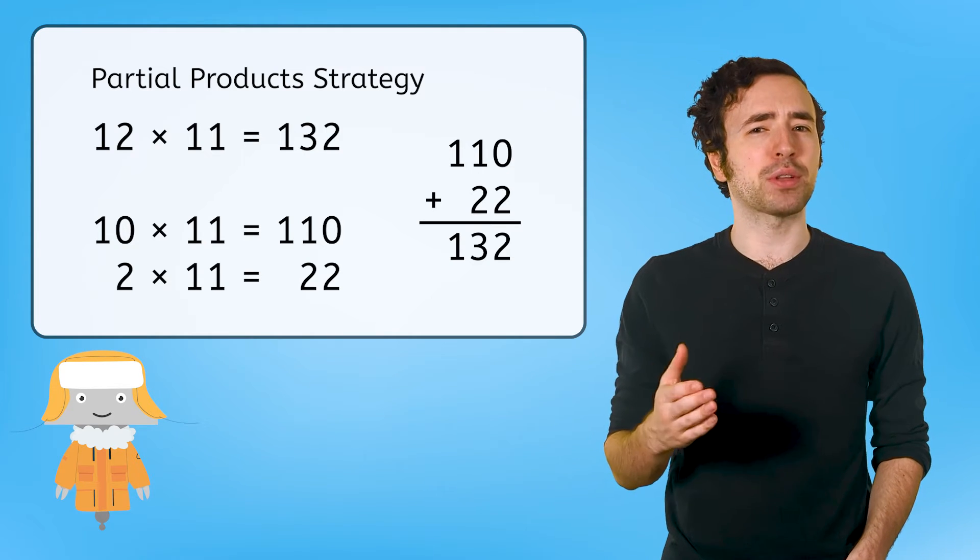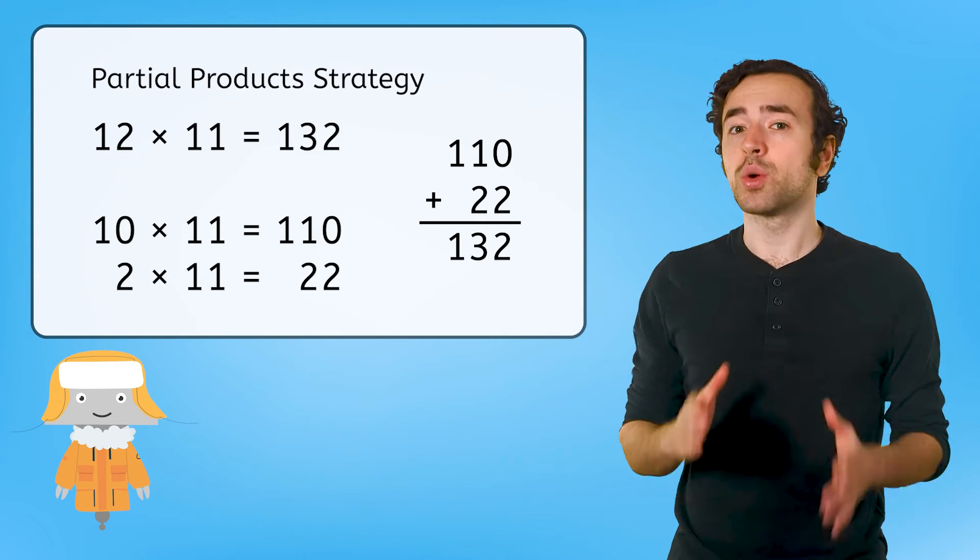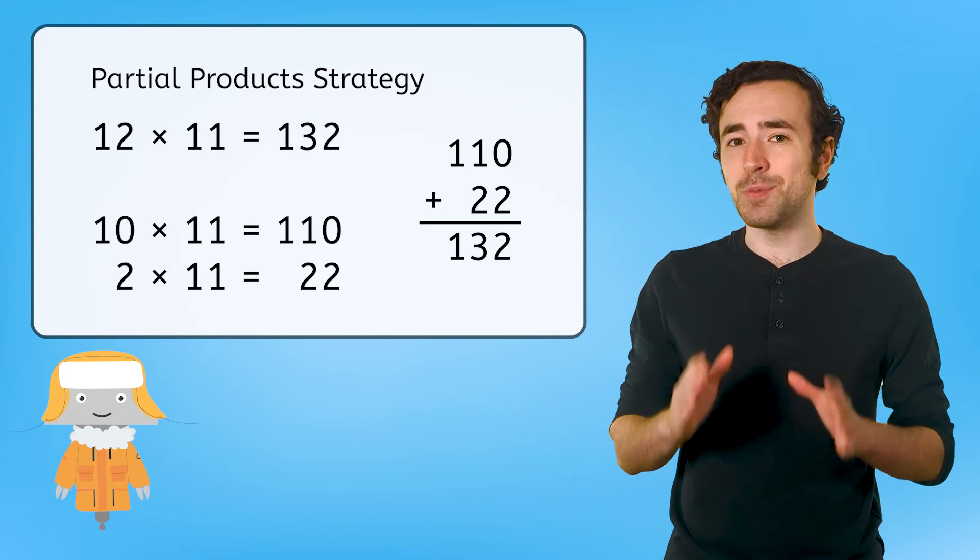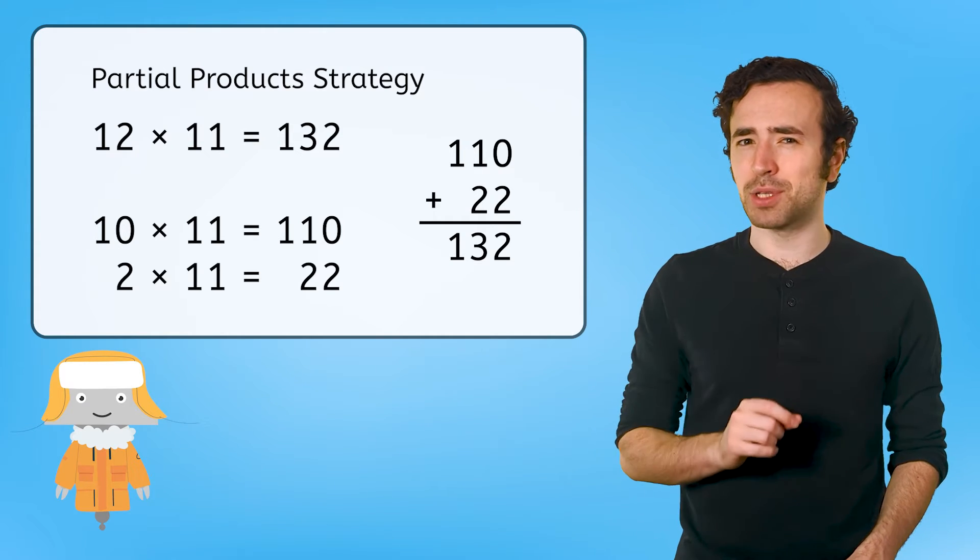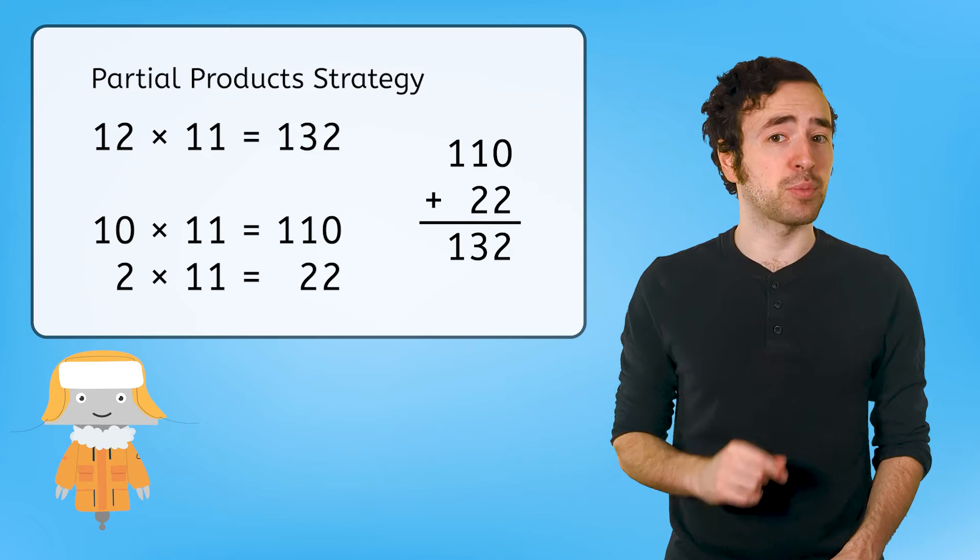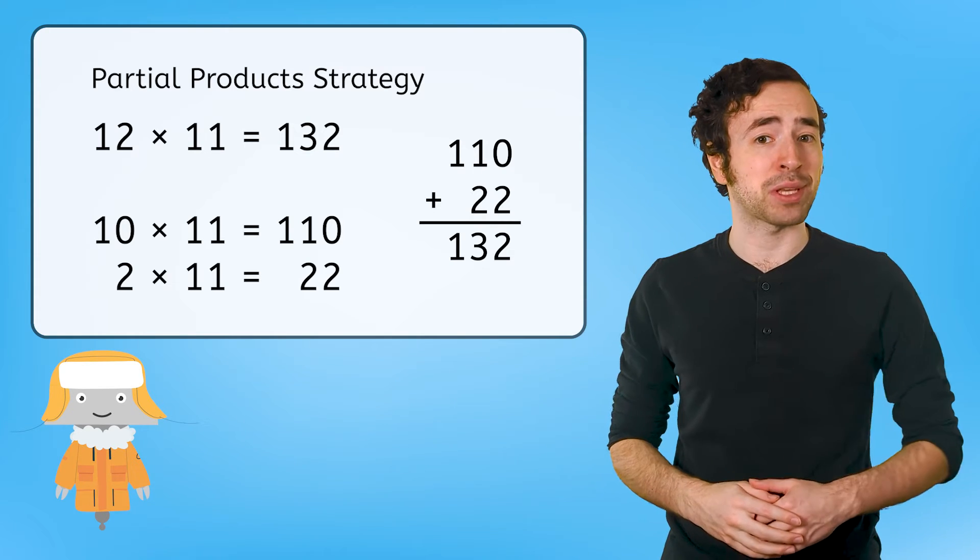Even if you broke down 12 into different amounts, like 9 and 3, or 6 and 6, your total product should still be 132. As long as the smaller parts add up to 12, and each part is multiplied by 11, you'll still get the same answer when you add them together.